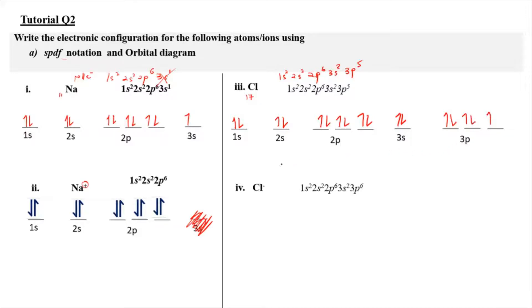So you're going to be looking at something like this — 17 electrons in total for the SPDF notation and 17 electrons in total for the orbital diagram as well.